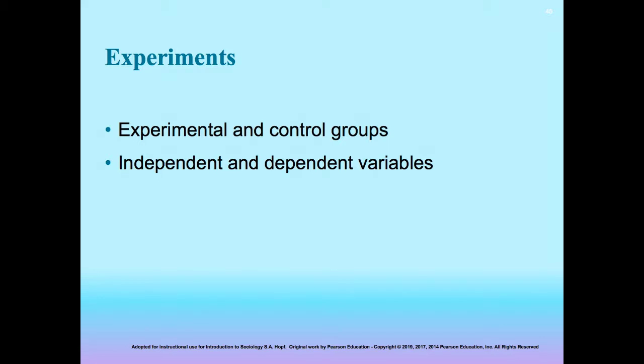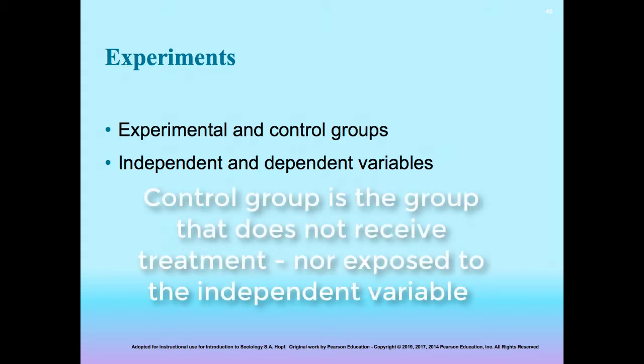Experiments must assure that there is an adequate control group. The control group is defined as the group in an experiment or study that does not receive treatment by the researchers and is then used as a benchmark to measure how the other tested subjects do.